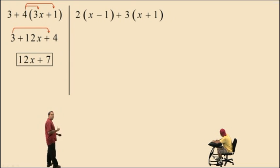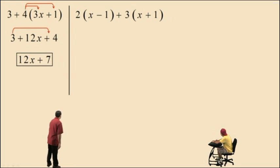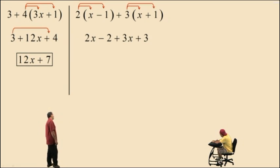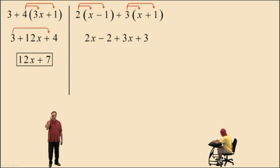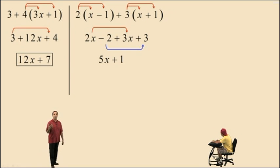Now we have two parentheses: 2 times the quantity x subtract 1, plus 3 times the quantity x plus 1. You have to perform the multiplications first — that's order of operations. But to do that you apply the distributive property, since you can't simplify what's in the parentheses. Distributing the 2: 2 times x is 2x, subtract 2 times 1 is 2. Then 3 times x is 3x, plus 3 times 1 is 3. We visualize subtract 2 as adding negative 2, so 2x plus 3x is 5x, and negative 2 plus 3 is positive 1. The answer is 5x plus 1.